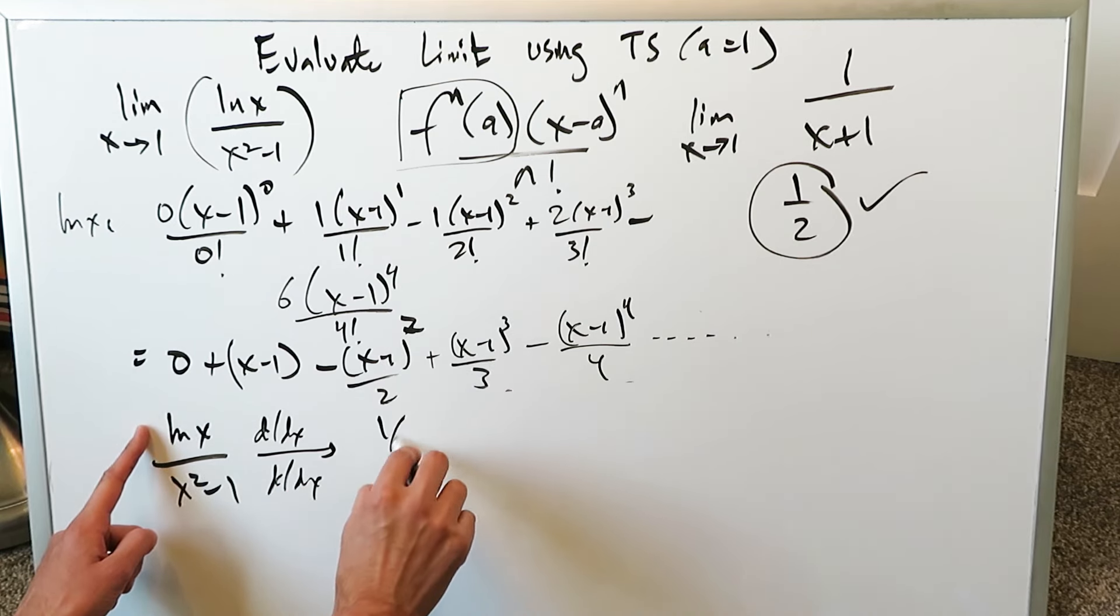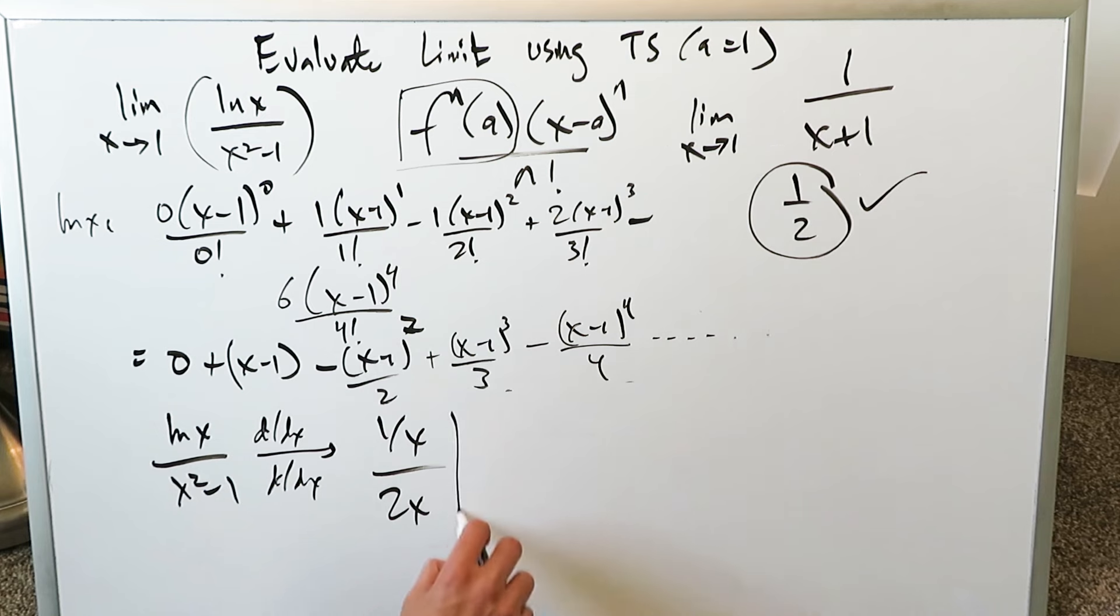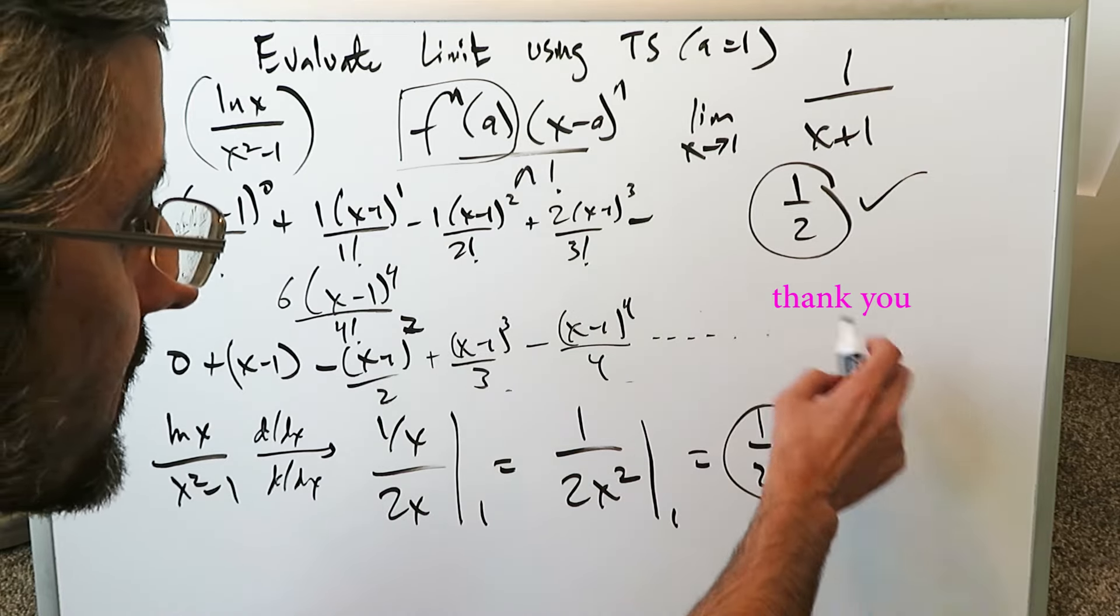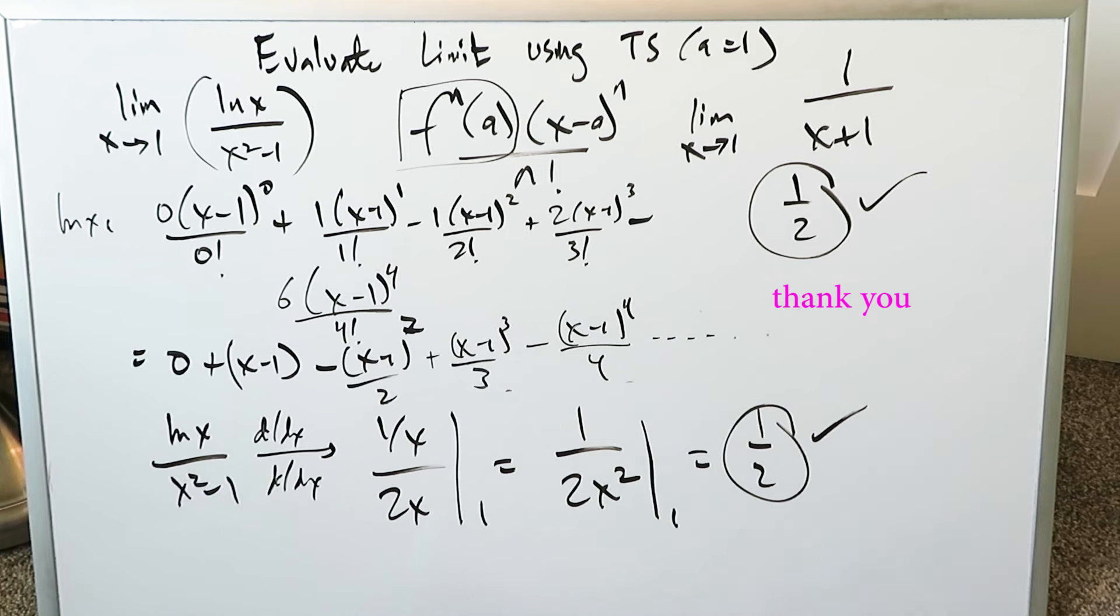You will do the derivative of the numerator and the denominator. From here you'll get 1 over x. From here you'll get 2x and obviously you can put 1 at the end. You can easily simplify it. You're getting 1 over 2x squared. When you put 1 over here in places of x, you end up with 1 over 2 and you know that's good. It easily verifies that for us.